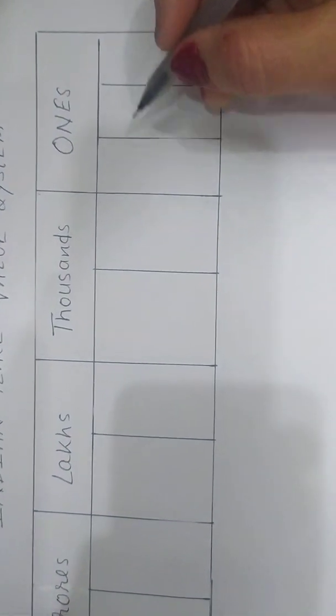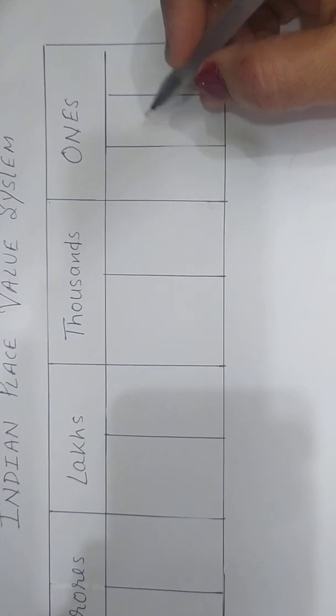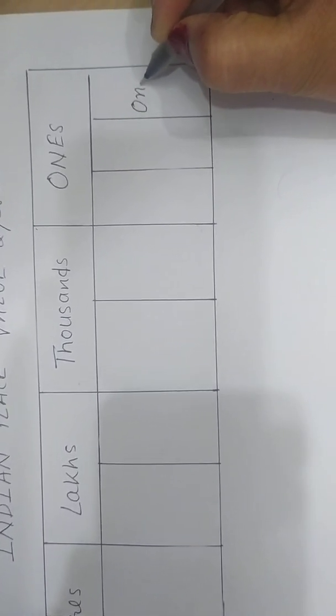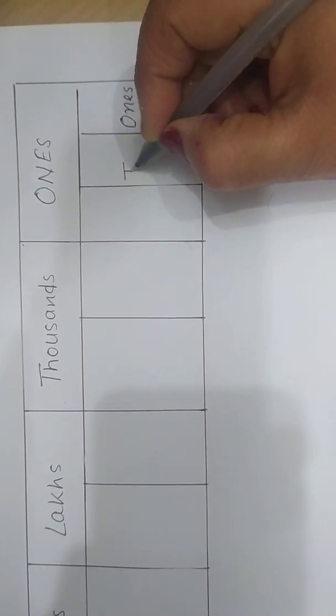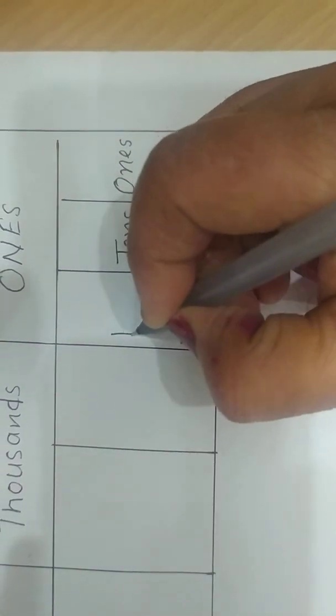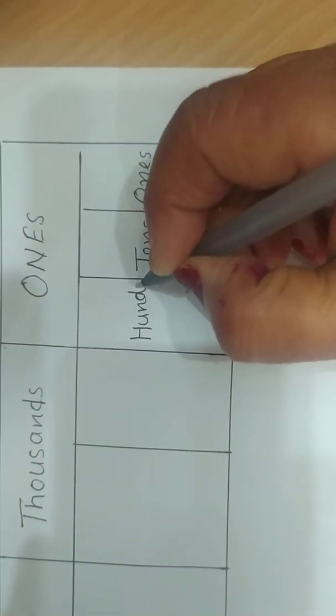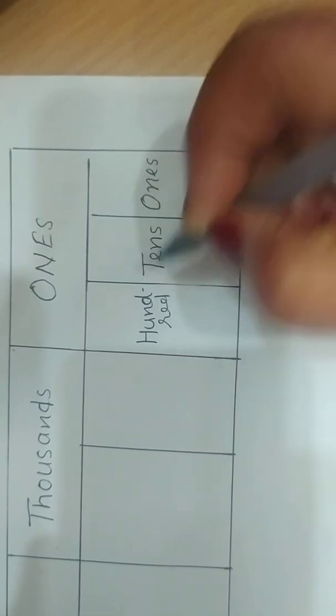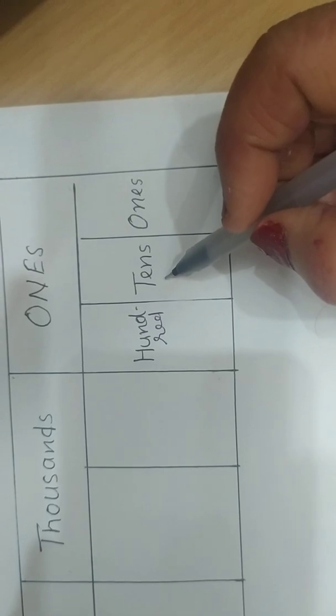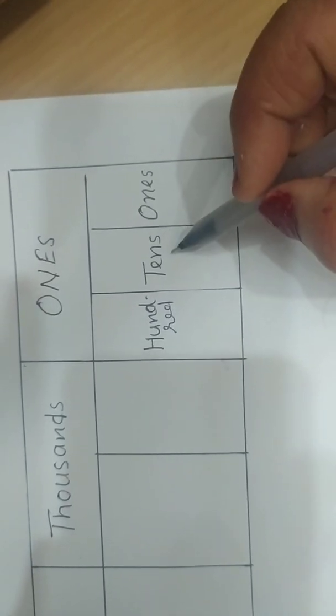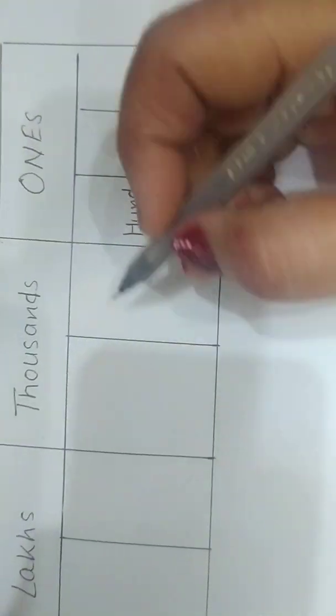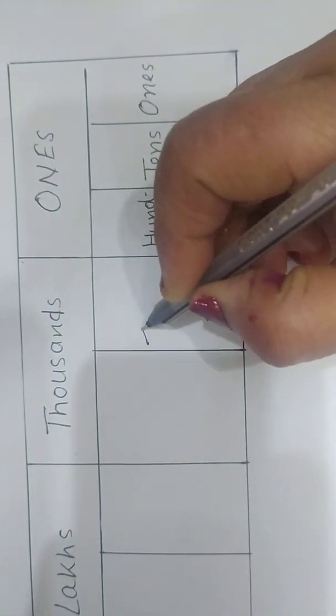Once period is divided into three places. First place is ones, second is tens and third is hundred. Once period is divided into three places: ones, tens and hundred.